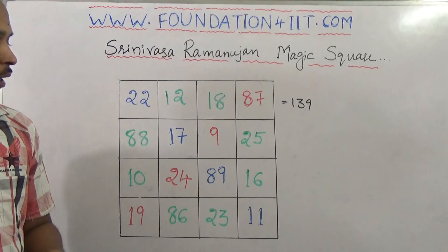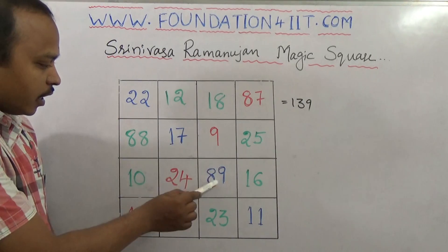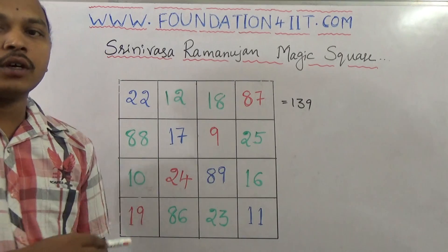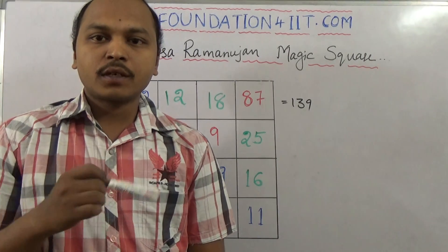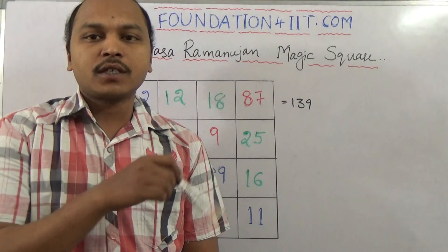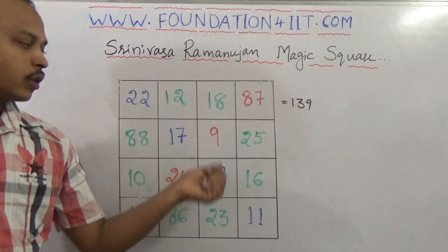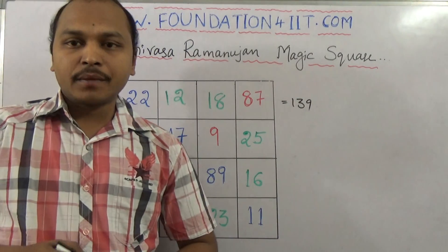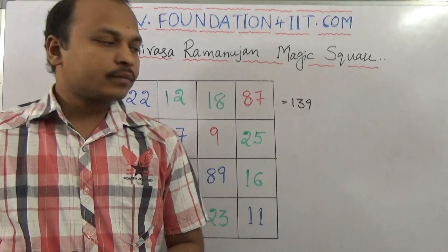Now the important one: if we take 17, 9, 89, and 24 — the center four numbers. The sum of the numbers in the center 2 by 2 box — 17, 9, 89, 24 — the sum is also 139.